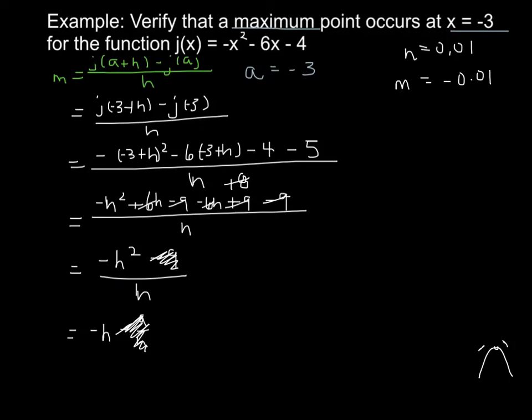We can see this makes sense so far. And h equals negative 0.01 gives us m equals positive 0.01, right? Because slope is negative h. So it appears that the closer we get to 0 with h, the closer m is going to get to 0. Therefore, at x equals negative 3, the slope appears to be 0.